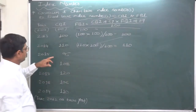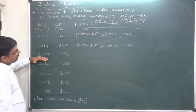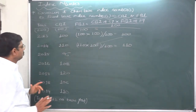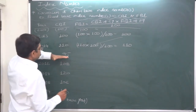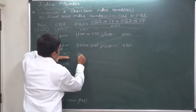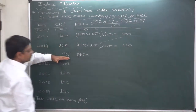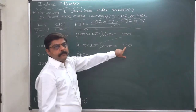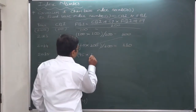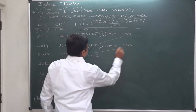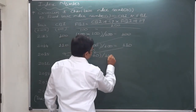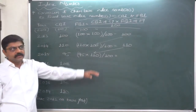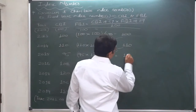Now the more interesting part comes for 2015. The chain base index number is 95, which is our current year's value, multiplied by the fixed base index number of the previous year that we calculated as 110, divided by 100. It is something like 95 percent of 110 — it comes to 104.5.